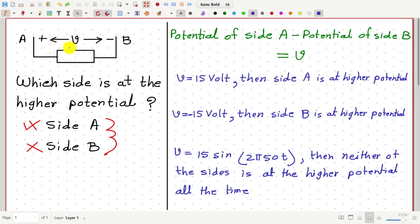Rather, it simply means that if we subtract the potential of minus side from the potential of plus side, we will get the value of V. And depending on whether the value of V is positive or negative, either side A or side B may be at the higher potential.